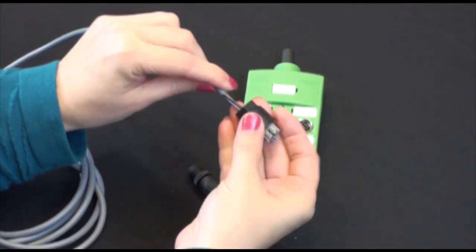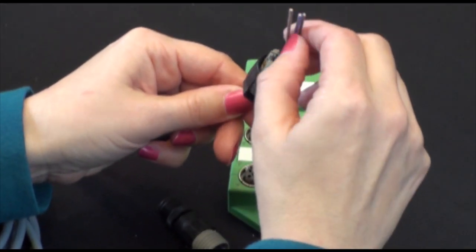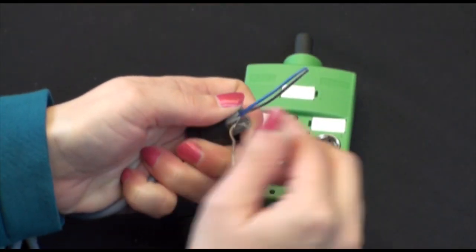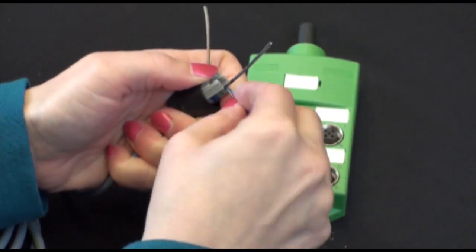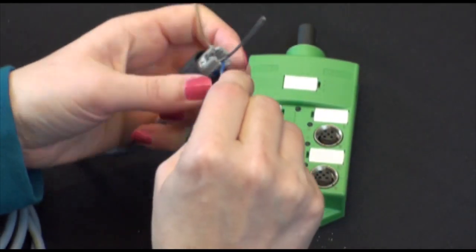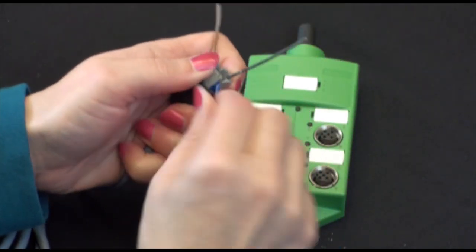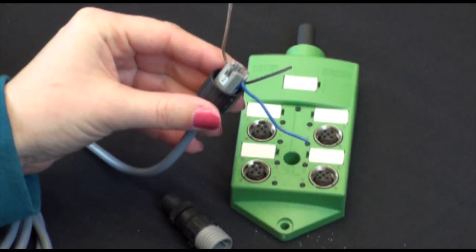In step two, you're going to feed the wires into the connector body. Next, you're going to pull down the color-coded wires into the correct terminals. Then snip the wires flush to the contact carrier.